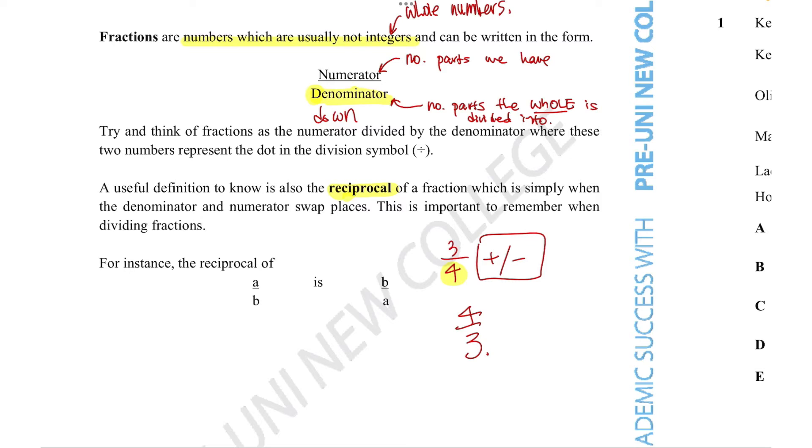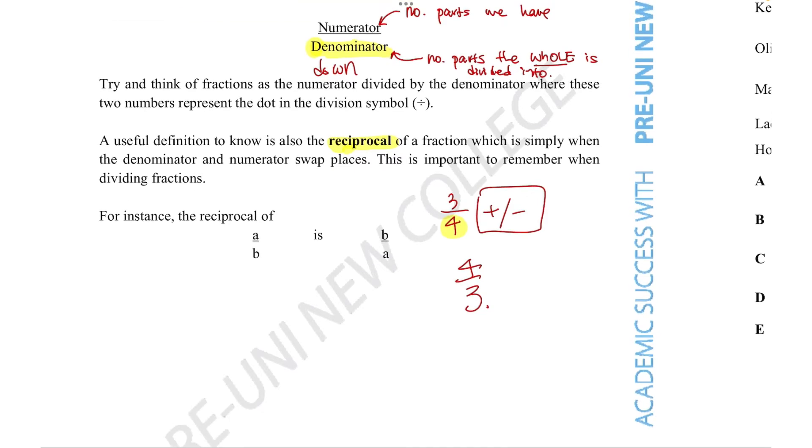Well, reciprocals basically makes division really easy. So for example, let's say we have a question that says find 3 over 4 divided by 9 over 16. So the thing is with fractions, dividing by a fraction is exactly the same as multiplying by the reciprocal. So what you do is change the division sign into a multiplication sign and flip the fraction around.